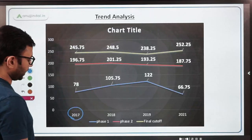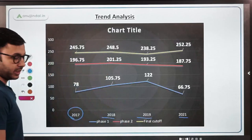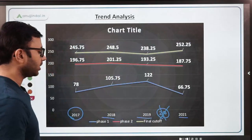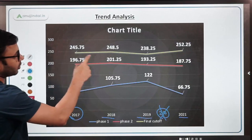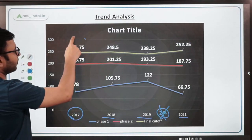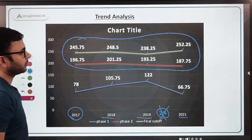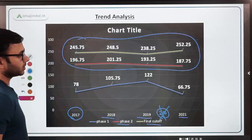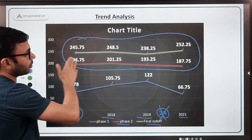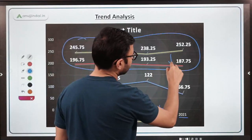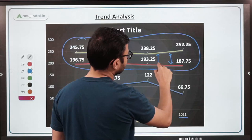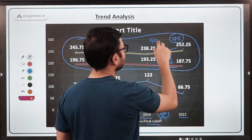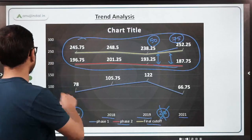We have data for 2017, 2018, 2019, and 2021 — the 2020 examination was not held. In 2021, a combined exam was held for 2020 and 2021. Let me explain where the trend matches and where it doesn't. We have two cutoffs: the final cutoff at the top and the Phase 2 cutoff below it. These are almost in sync, but the gap increases in later years.